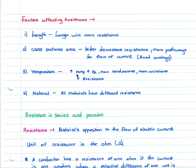Third, temperature: increased temperature increases the kinetic energy of particles, causing more randomness and collisions, which increases resistance. Conversely, lower temperature decreases resistance, and a narrower conductor increases resistance while a shorter length decreases it. Fourth, material: different materials have different natural resistances — some conductors have greater resistance and some have less.